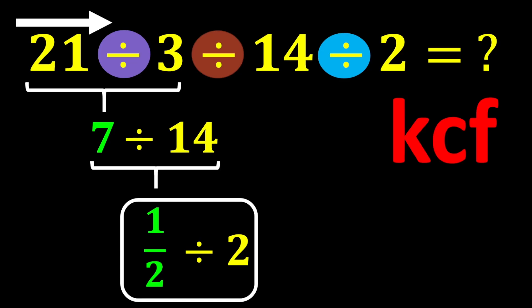K stands for keep, C stands for change, and F stands for flip. The KCF rule is a simple rule for dividing fractions.